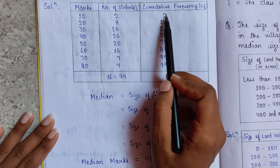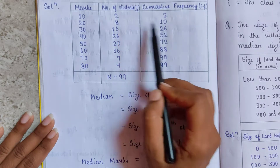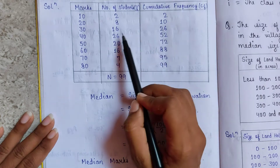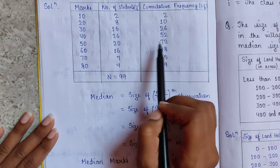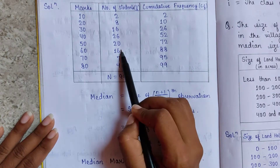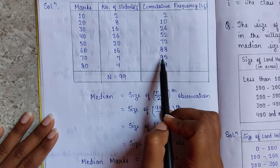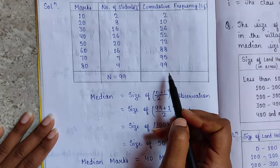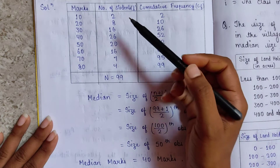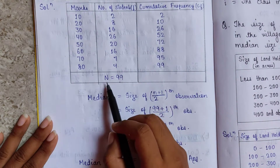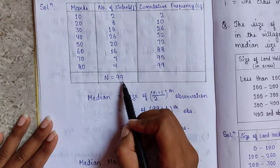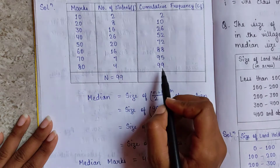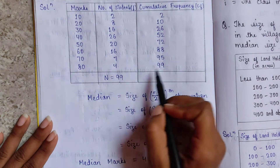We will add: 2 plus 8 is 10; 10 plus 16 is 26; 26 plus 26 is 52; 52 plus 20 is 72; 72 plus 16 is 88; 88 plus 7 is 95; 95 plus 4 is 99. The sum of frequency is 99, and this equals the last cumulative frequency value — so the cumulative frequency is correct.